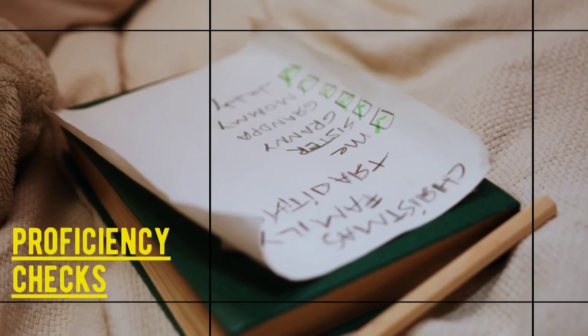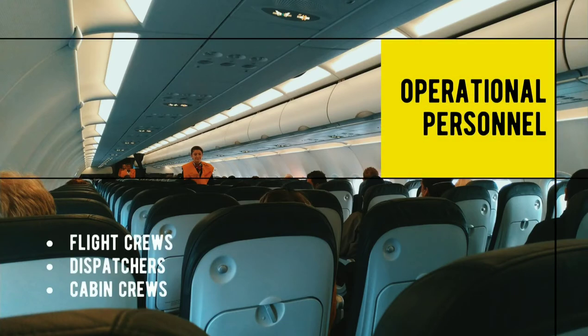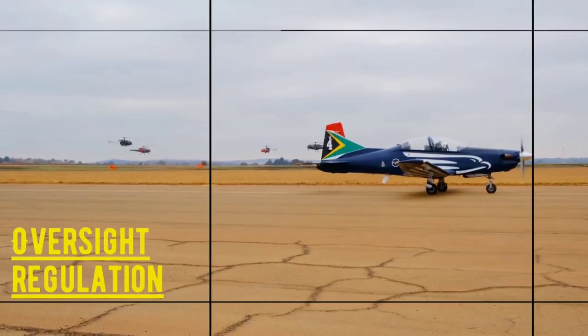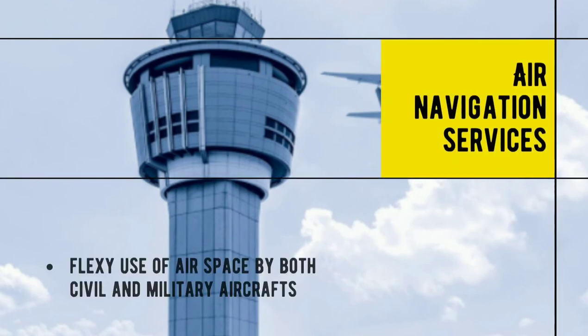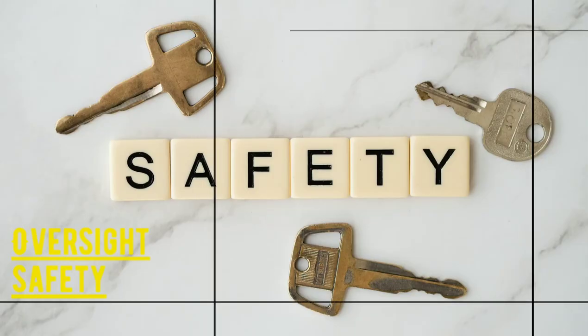Number eight: they also check the proficiency of flight crew and other operational personnel such as flight dispatchers and cabin crew. Number nine: they regulate and oversee matters related to air navigation services. They also coordinate at national level for flexible use of airspace by civil and military air traffic agencies, and interact with ICAO for provisions of more air routes for civil aircraft through Indian airspace.